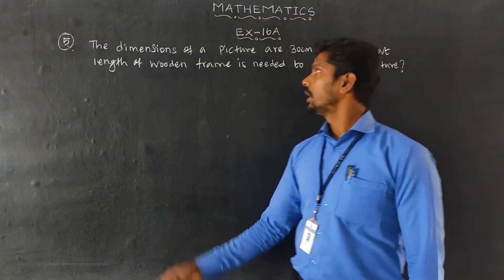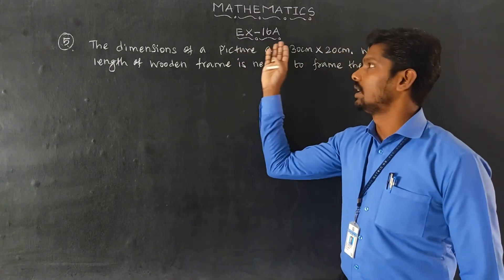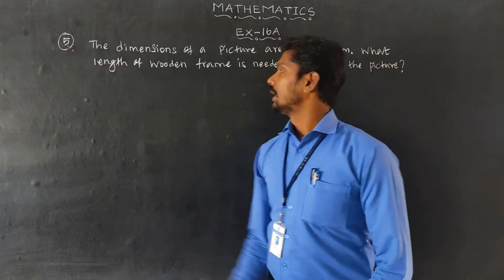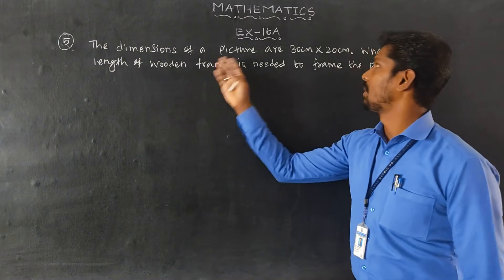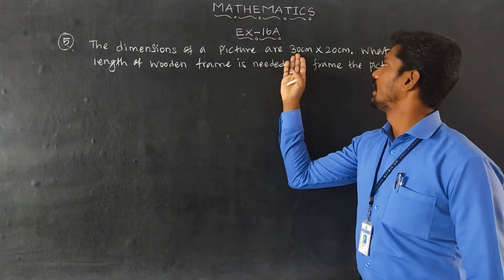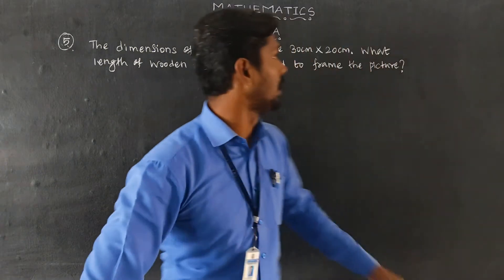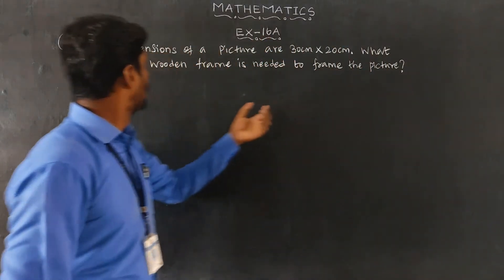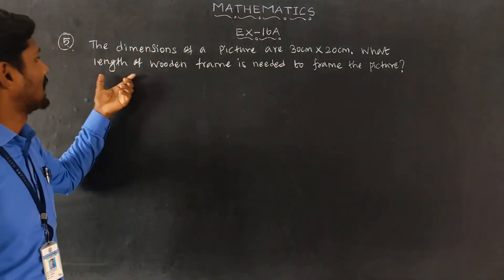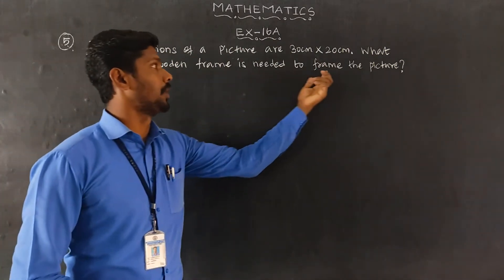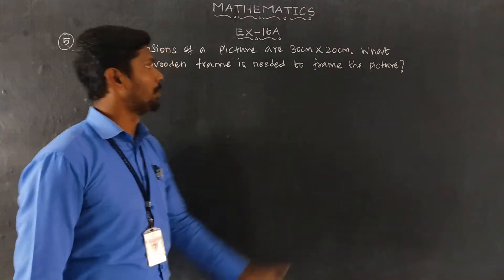Dear student, Exercise 16, Question 5. The dimension of the picture is 30cm x 20cm. What length of wooden frame is needed to frame the picture?